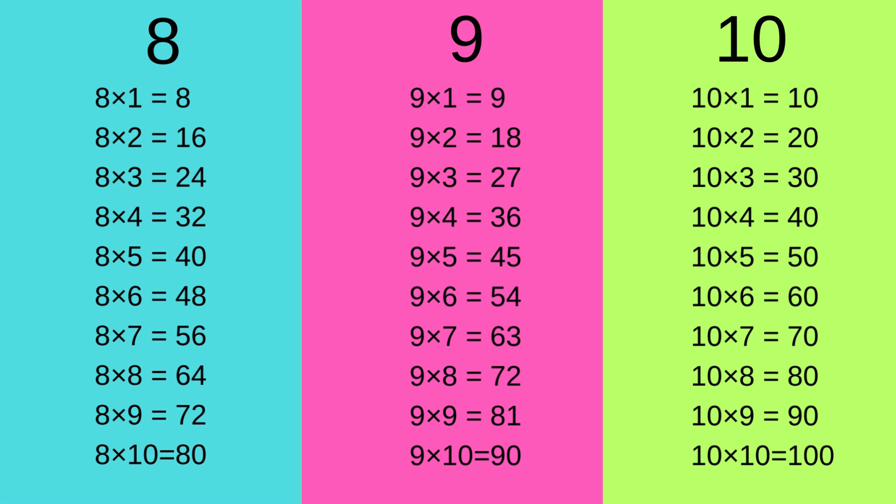9 1's are 9, 9 2's are 18, 9 3's are 27, 9 4's are 36, 9 5's are 45, 9 6's are 54, 9 7's are 63, 9 8's are 72, 9 9's are 81, 9 10's are 90. Awesome!